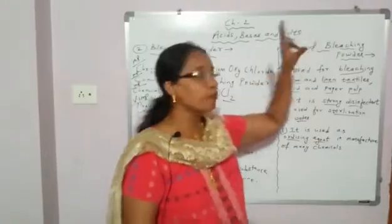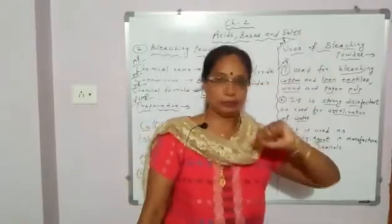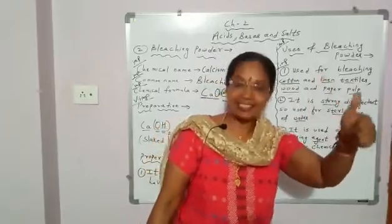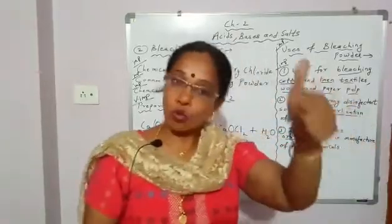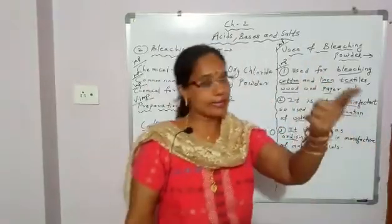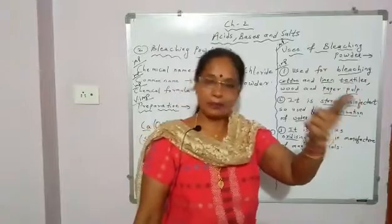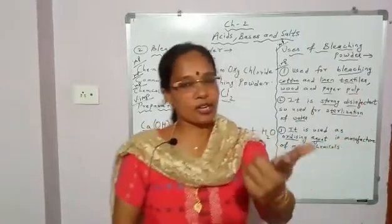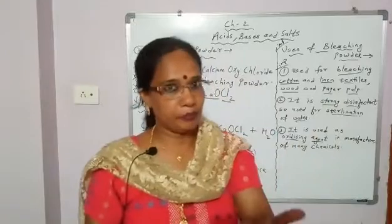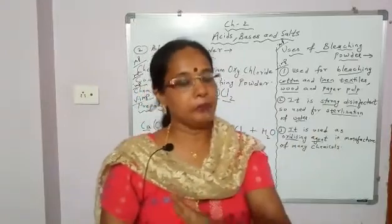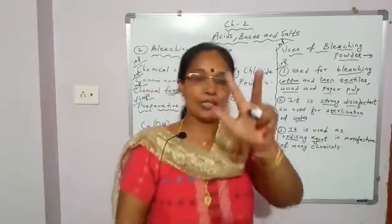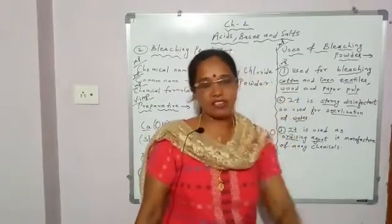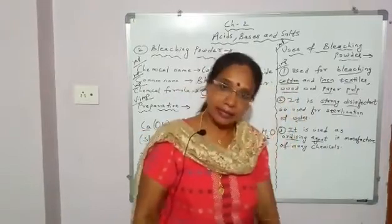So these are the three important uses of bleaching powder. First: used for bleaching cotton and linen textiles, and wood and paper pulp. Second: it is a strong disinfectant, used for sterilization of water to kill bacteria. Third: it is used as an oxidizing agent in the manufacture of many chemicals.